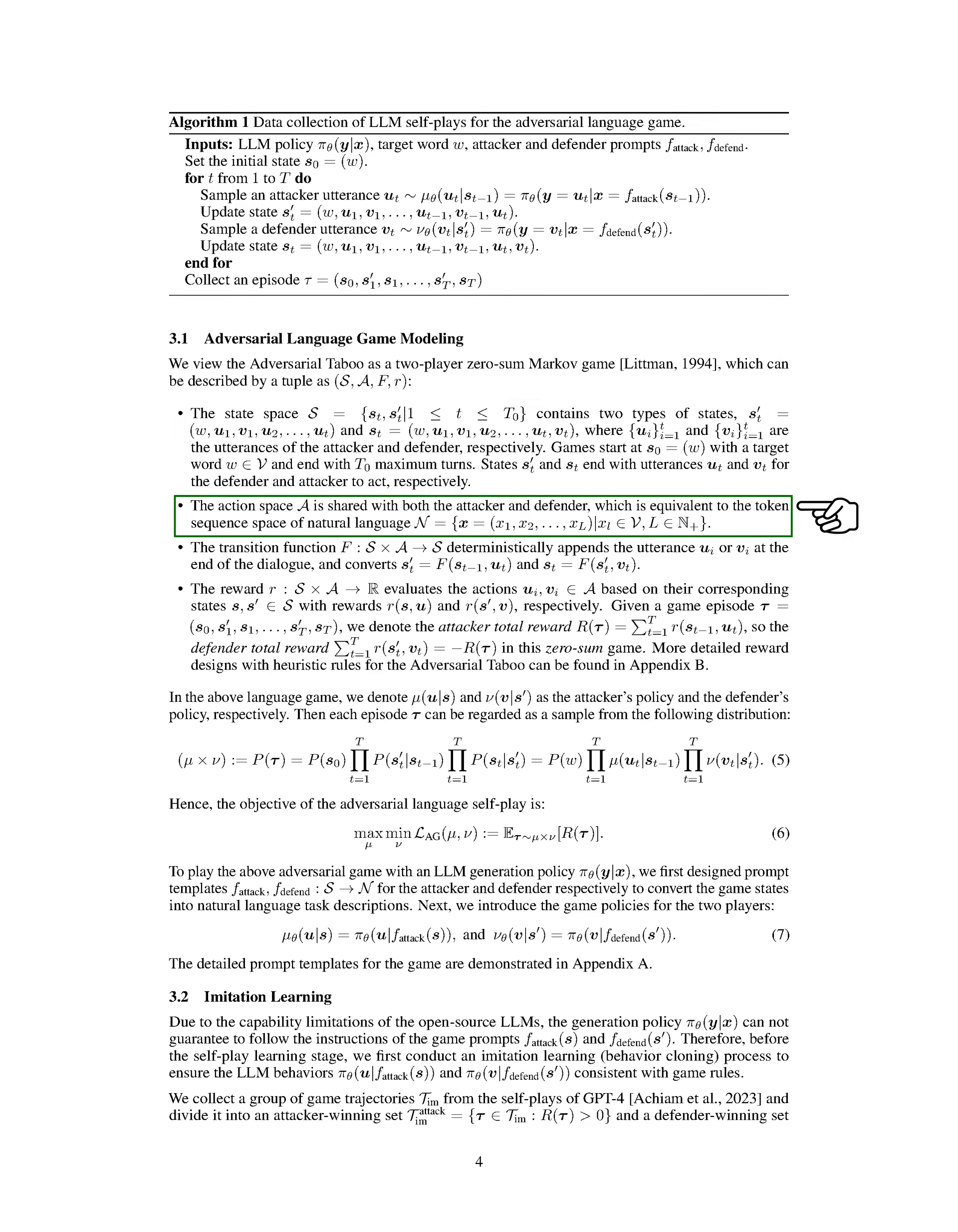The action space includes all possible token sequences in natural language. The transition function updates the state based on the player's actions, and the reward function evaluates the actions taken by the players in each state. During a game episode, the attacker's total reward is the sum of rewards obtained throughout the game.